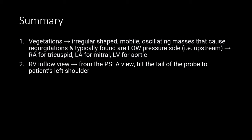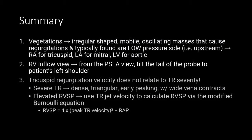The RV inflow view is important. From the parasternal long axis view, tilt the tail of the probe to the patient's left shoulder to bring out the RV inflow. Finally, tricuspid regurgitation velocity does not relate to TR severity. If you have severe tricuspid regurgitation, you'll notice the Doppler signal is dense, triangular, and early peaking, with a wide vena contracta. Whereas if you have elevated right ventricular systolic pressure, you'll use the maximum velocity of the TR jet to calculate the RVSP using the modified Bernoulli equation, which we will discuss in a future case.